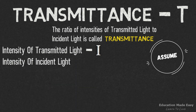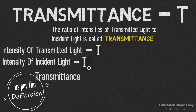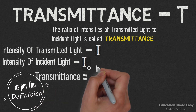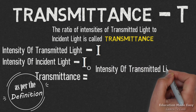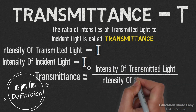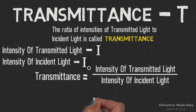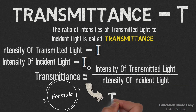So as per the definition, we can write: transmittance is equal to intensity of transmitted light divided by intensity of incident light. So the formula of transmittance will be T is equal to I divided by I₀.